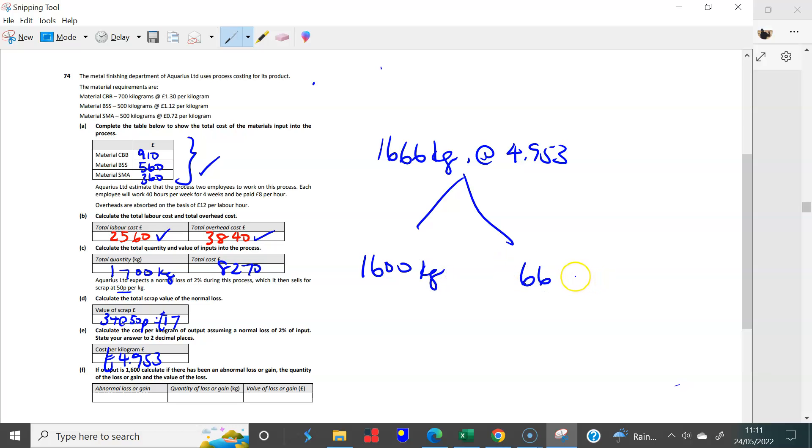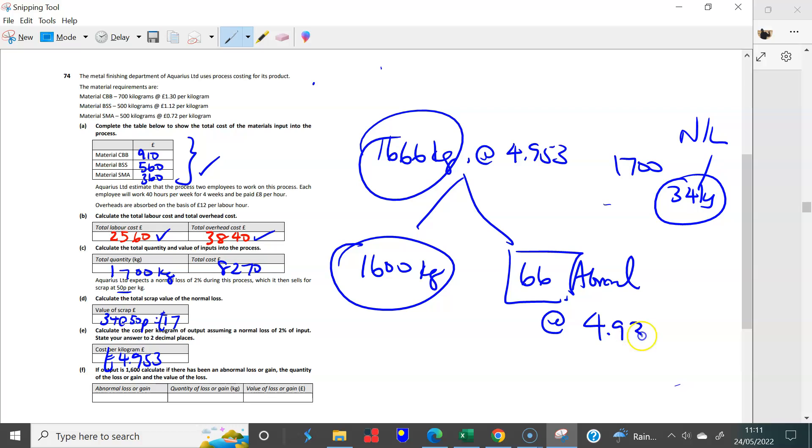But what's really happened is that I have 1,600 good kilograms, and therefore I have 66 kilograms that are abnormal. Because if you like, I went from 1,700 to losing 34 kilograms as a normal loss, expecting 1,666, but only 1,600 came out, and therefore 66 of those kilograms are abnormal. But those are valued at the 4.953. So I have an abnormal loss, definitely. The quantity of that loss is 66 kilograms, and the value of that is 66 at 4.953. It's always valued at the standard full production cost times 66. That's the value we assign to them, 326.9. And whether or not we sell them for that amount is a different picture, but in terms of the valuation of that, that's what they are.